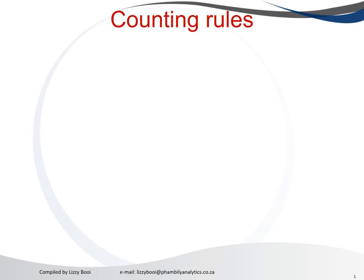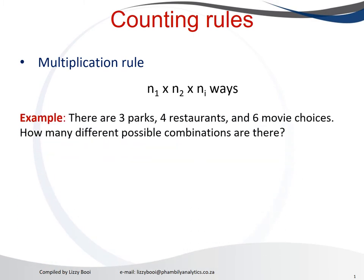The first one that we're going to look at is the multiplication rule. What multiplication rule tells us is how many number of ways can we do things. We can do things in n1 times n2 times n3 ways. Okay, what does that mean? Let's look at an example.